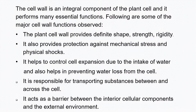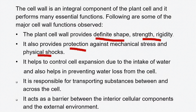Cell wall plays a very important role. First, it provides definite shape, strength and rigidity to the plant cells. Second, it provides protection against mechanical stress and physical shocks. Third, it helps to control cell expansion due to the intake of excess water, and it also helps in preventing water loss during transpiration or other processes.